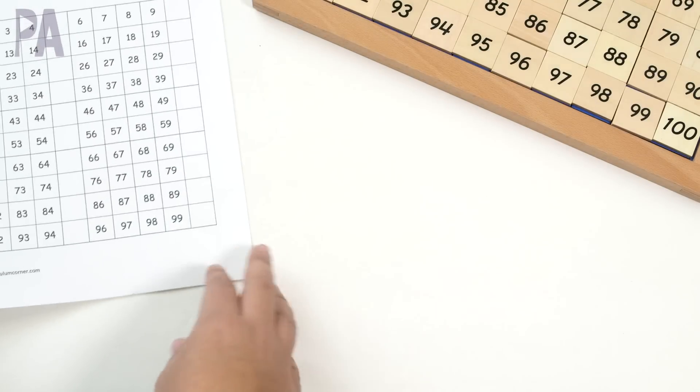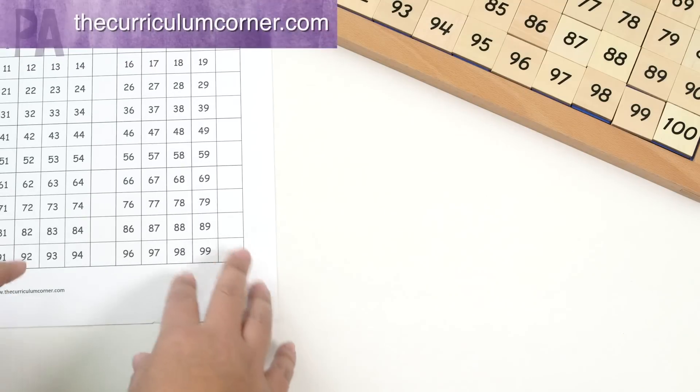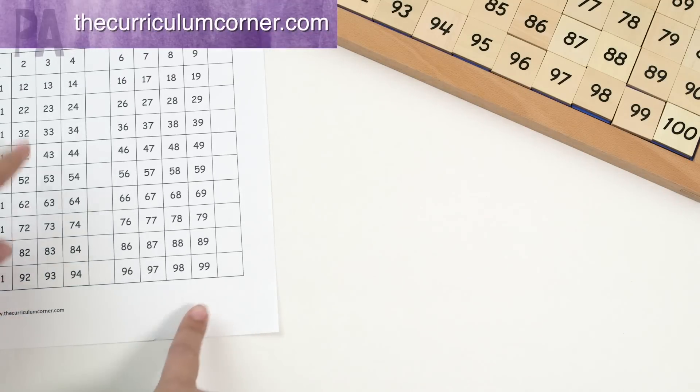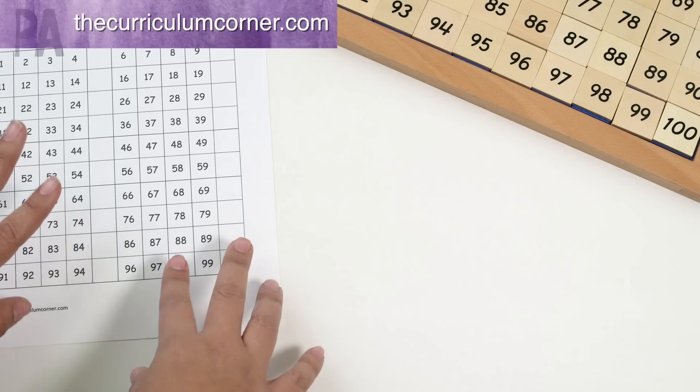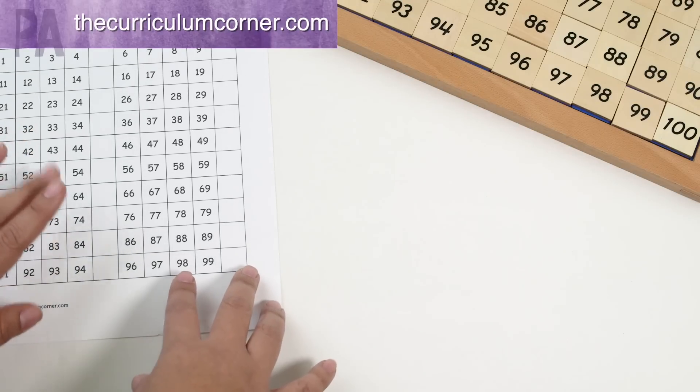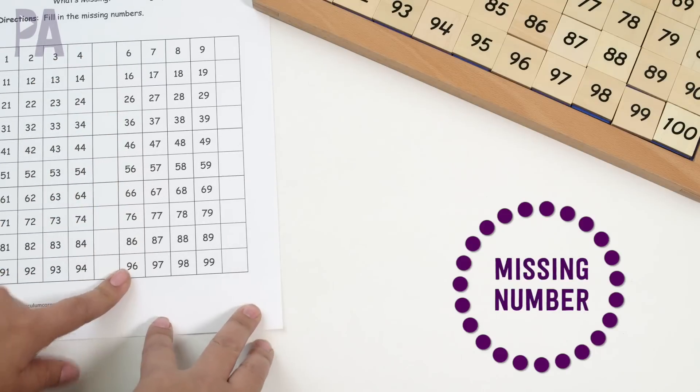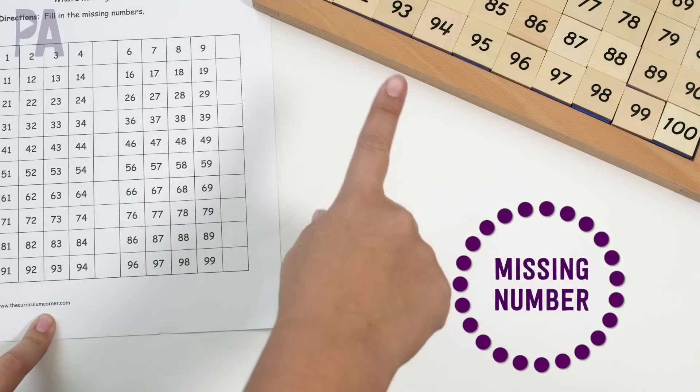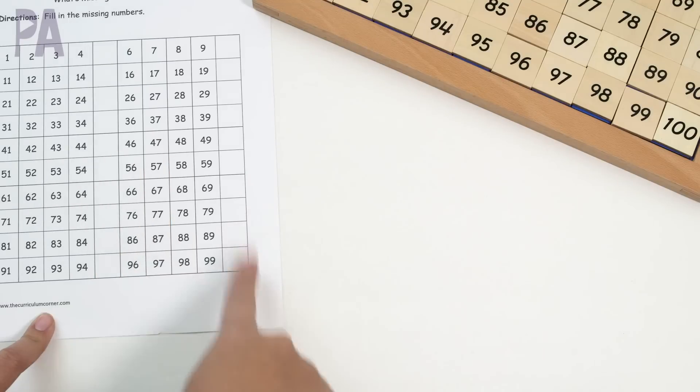Next is a What's Missing Counting by Fives chart from the Curriculum Corner. So this is exactly the 100 chart with the fives missing. I think she has every one that is available for skip counting: twos, threes, fours, fives. You just fill in the missing number and then you can refer to your Montessori 100 chart to know if you got it right or not.